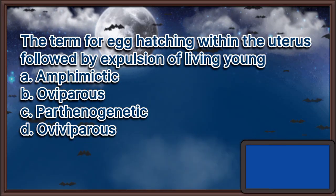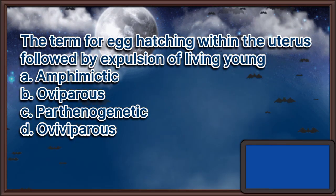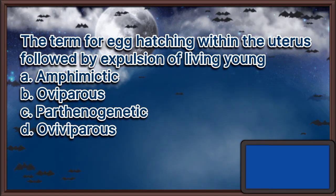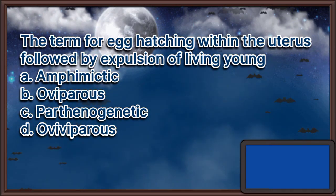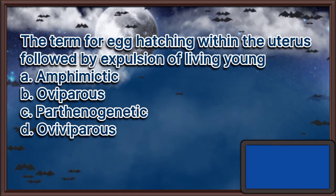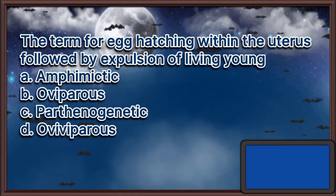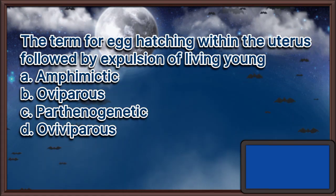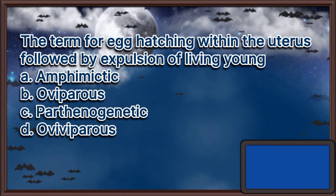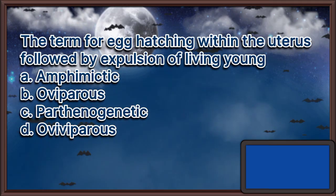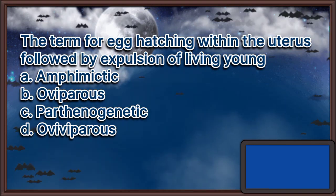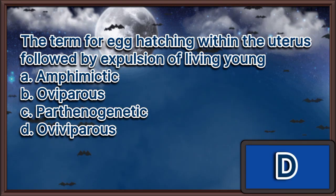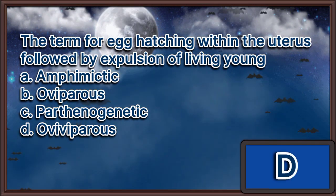The term for egg hatching within the uterus followed by expulsion of living young: A. Amphimictic, B. Oviparous, C. Parthenogenetic, D. Ovoviviparous. The answer is letter D.